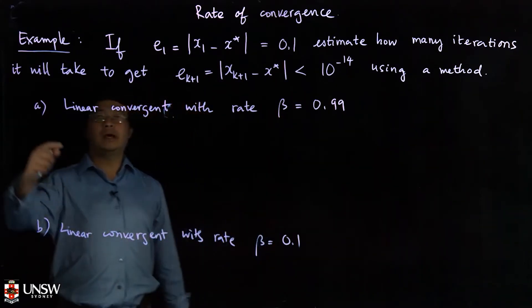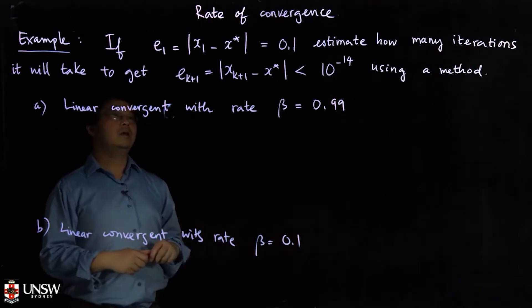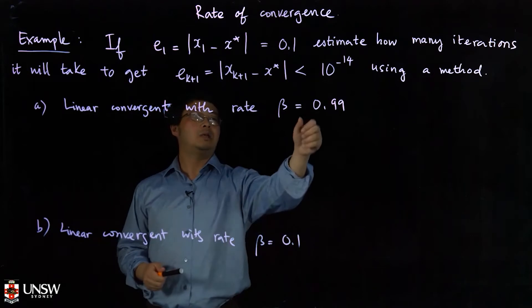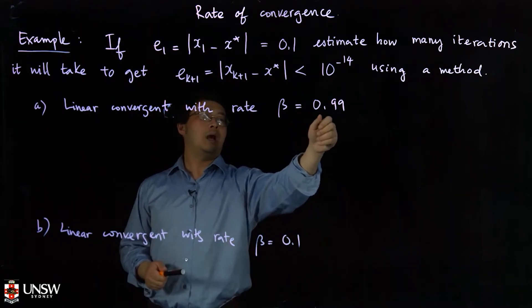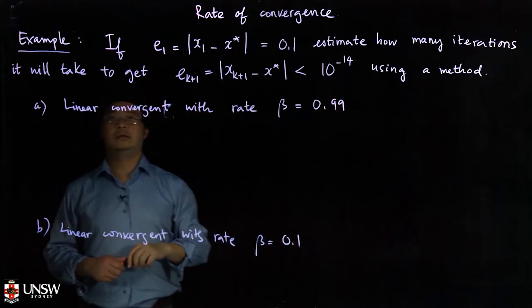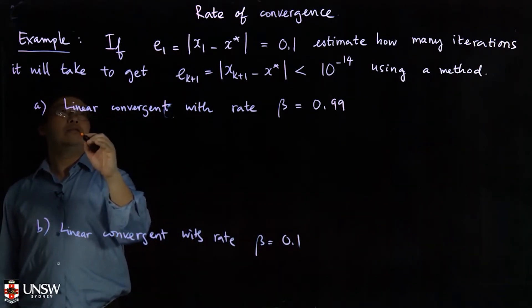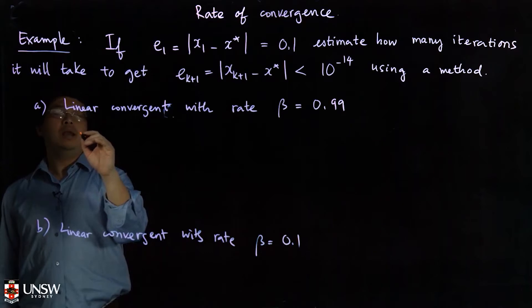We do it for two cases. First we assume that the method is linear convergence, and then the rate of convergence will be beta. Beta is either close to 1 or close to 0.